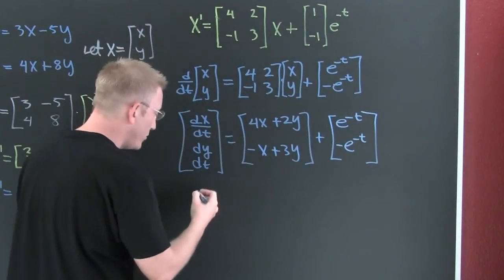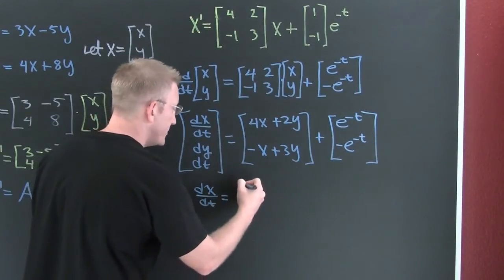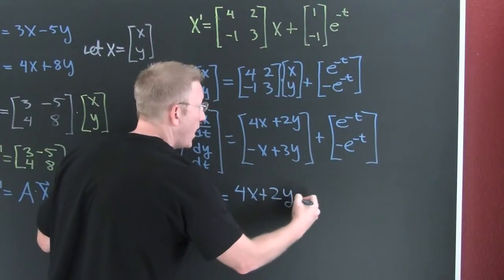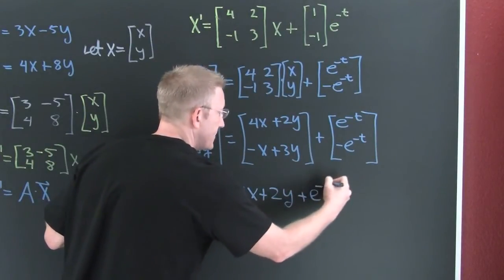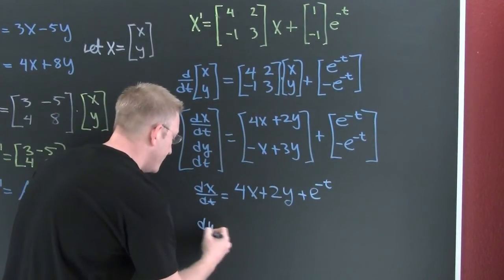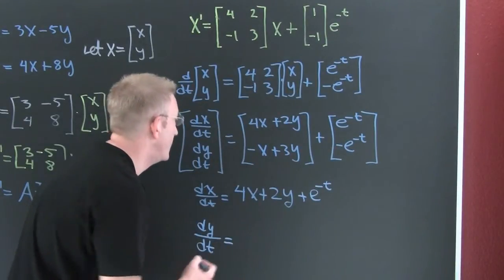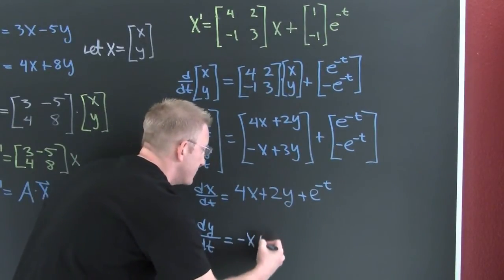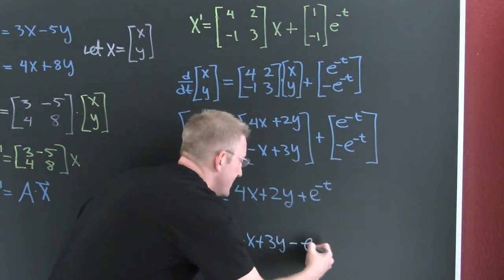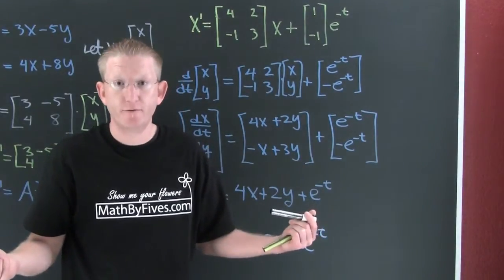And then we'll see when we add these, our top row is going to give us dx/dt is equal to 4x plus 2y plus e to the minus t. And our bottom row is going to give us that dy/dt is going to be minus x plus 3y minus e to the minus t. So then there we see, we can go in between the forms.